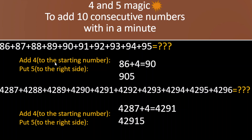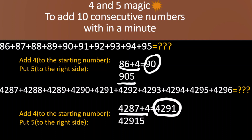To add 10 consecutive numbers within a minute, just add 4 to the starting number and put 5 to the right side of the answer. Here is the answer — add 4 to the starting number and put 5 to the right side of the answer we get in the first step. Thank you.